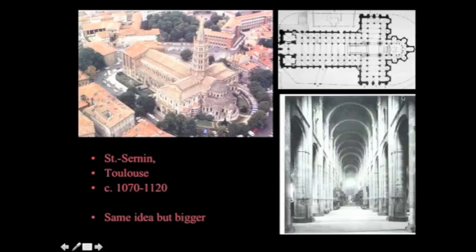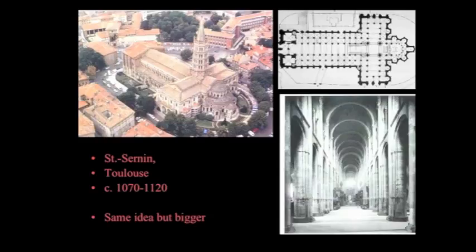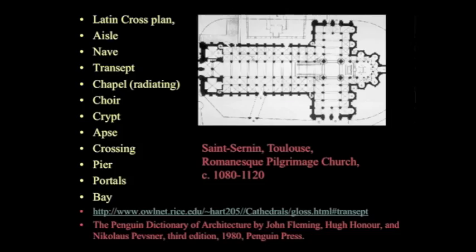We have a Westwork, a Latin cross plan, and radiating chapels. In terms of massing, you can really understand this thing as being assembled from simple blocky constituent parts. Here's just a little list of all the kinds of things we find in a church like Saint-Sernin in Toulouse — a Romanesque pilgrimage church.